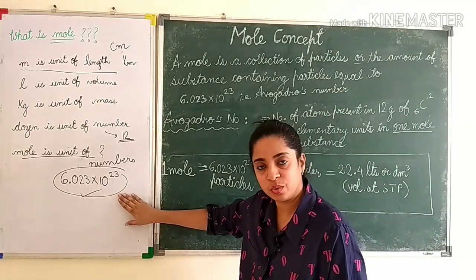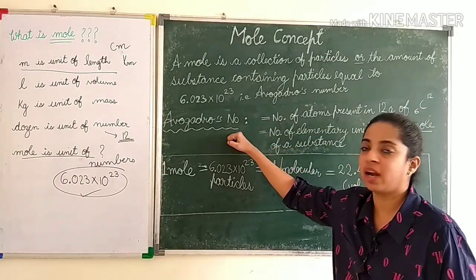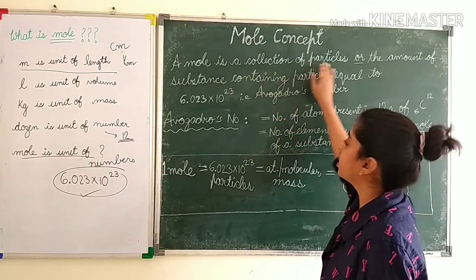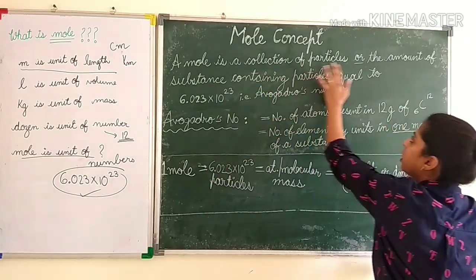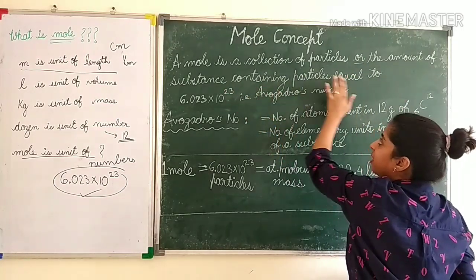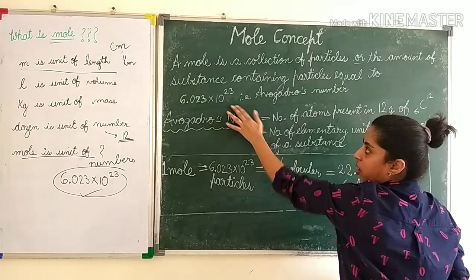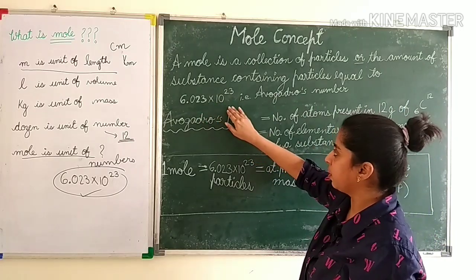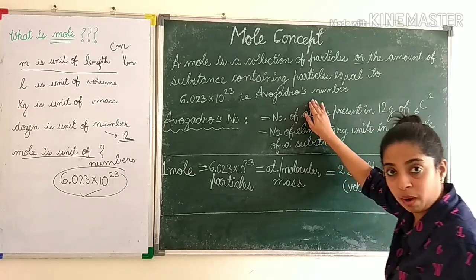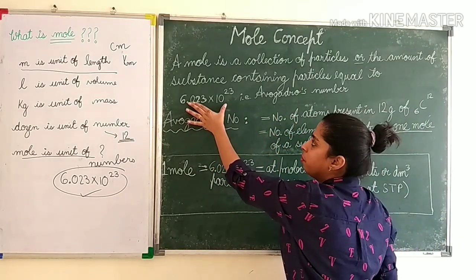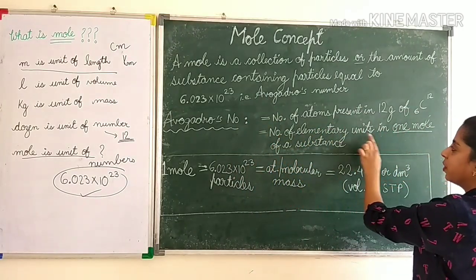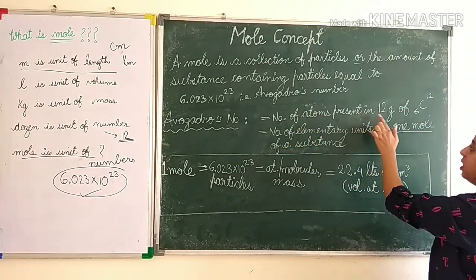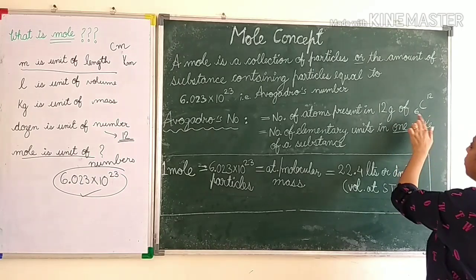Mole is a unit of number and that number — 6.023 × 10²³ — is also known as Avogadro's number. So a mole is a collection of particles, or the amount of substance that contains particles equal to 6.023 × 10²³. Avogadro's number is also defined as the number of atoms present in 12 grams of carbon-12.